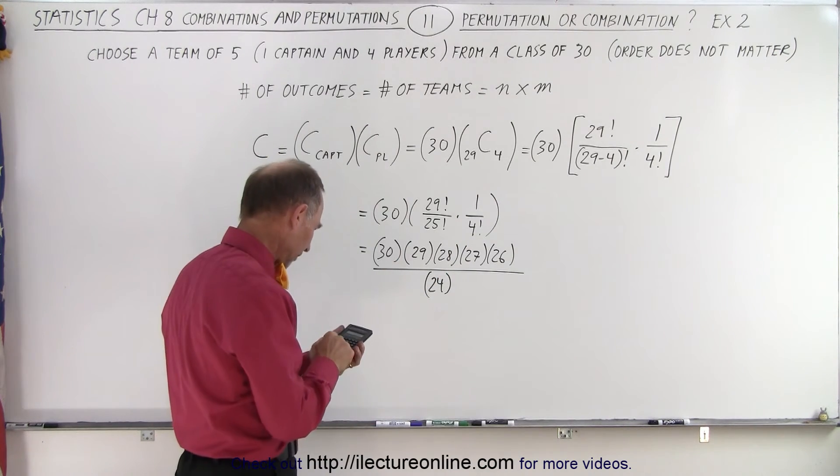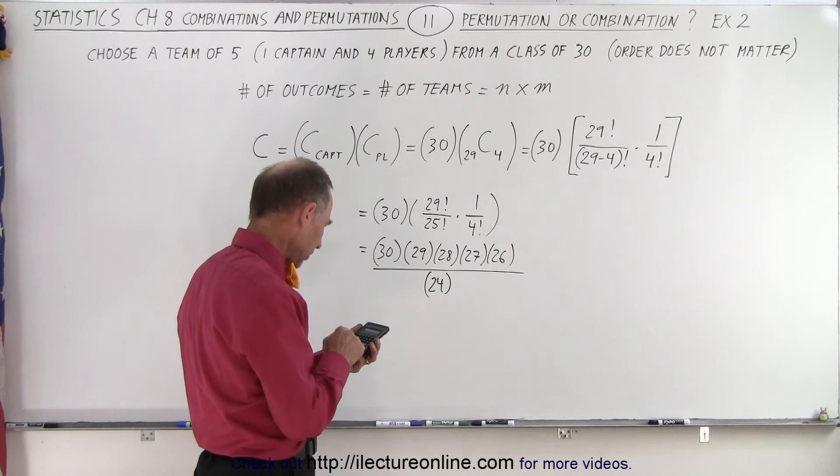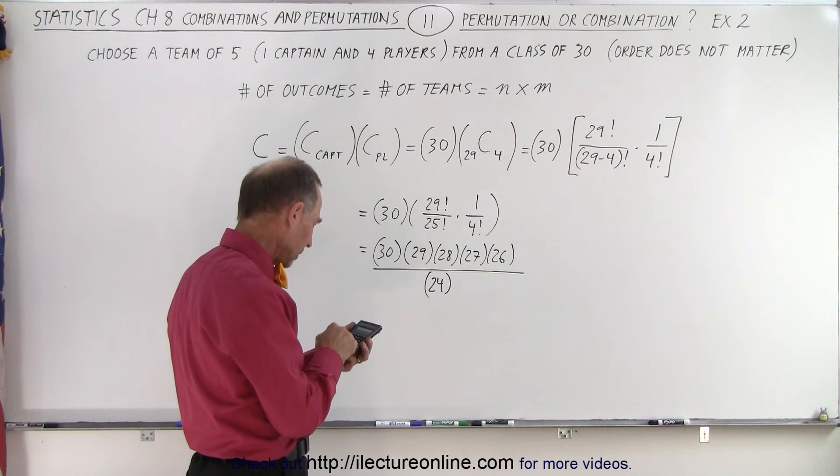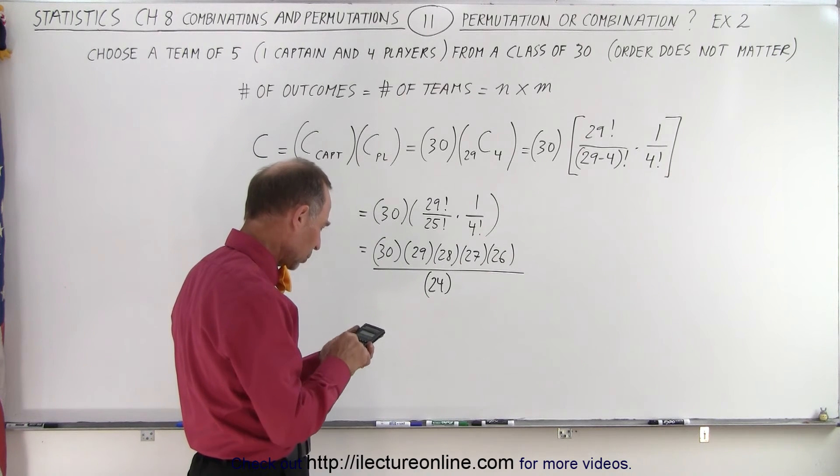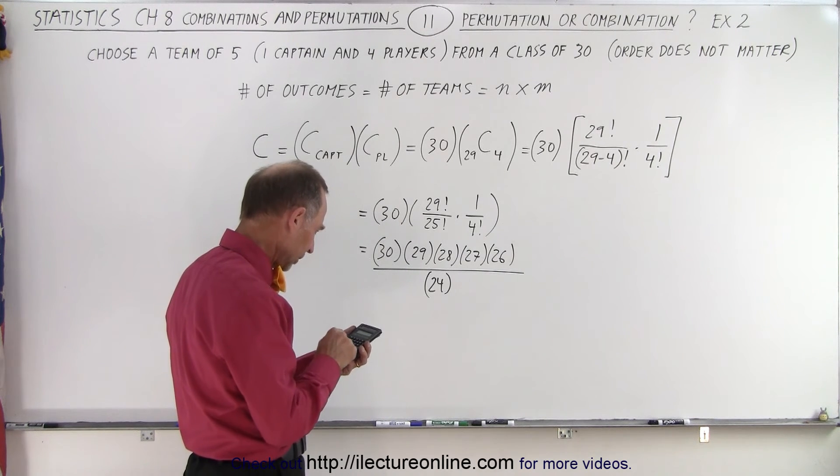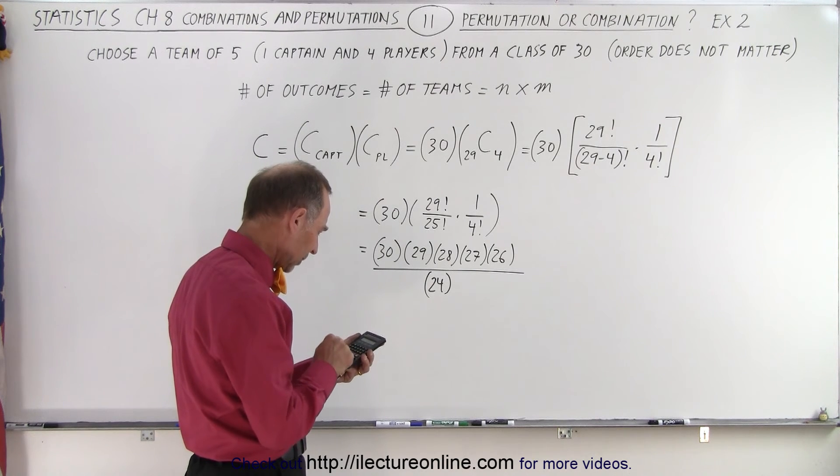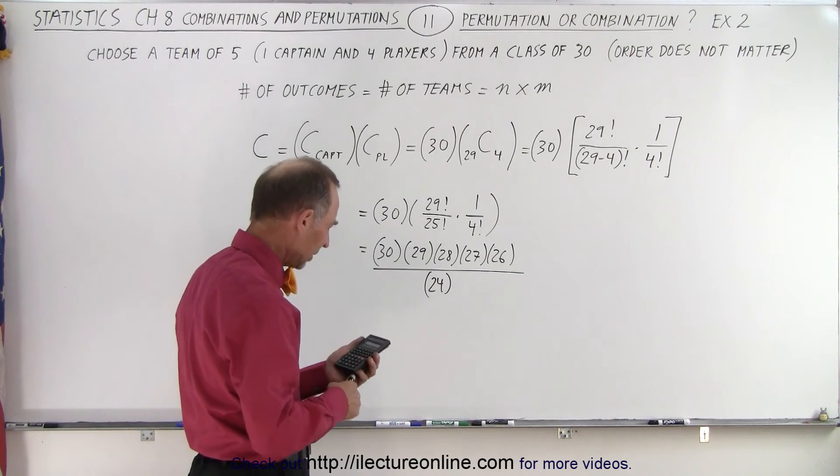All right, let's see what that is equal to. So we have 30 times 29 times 28 times 27 times 26. Well, I might as well write that down.